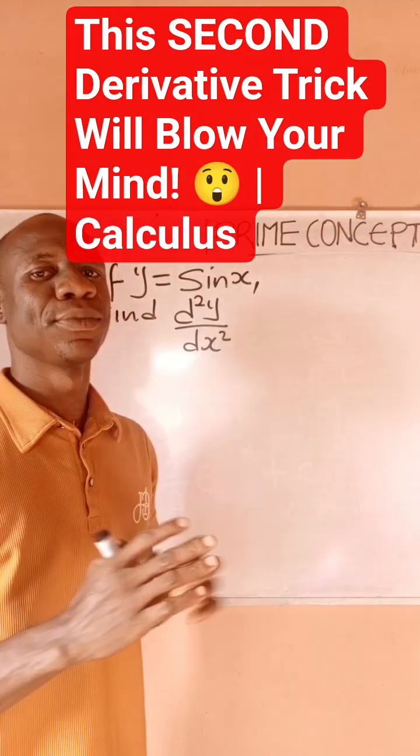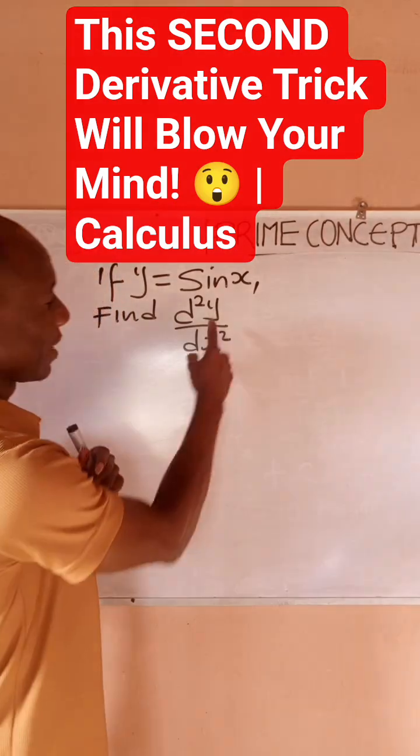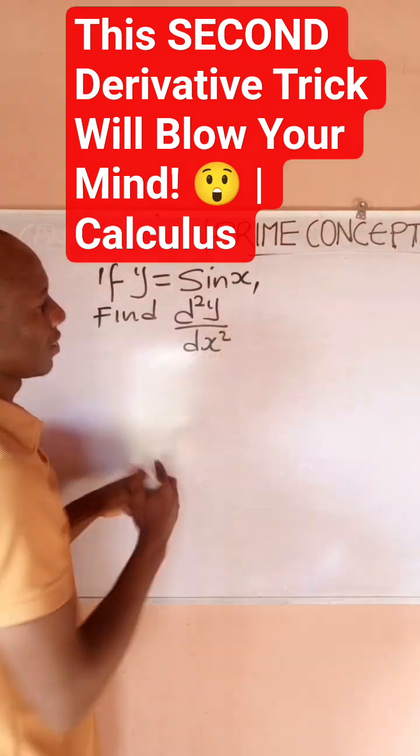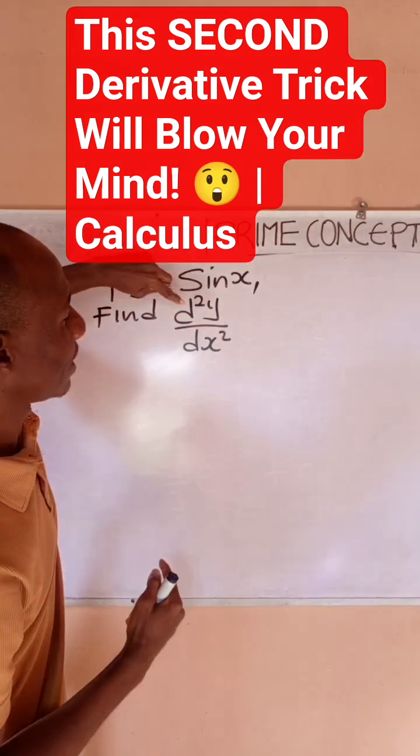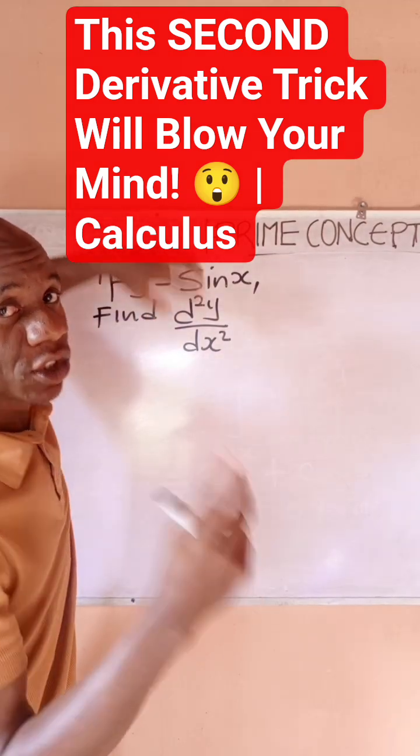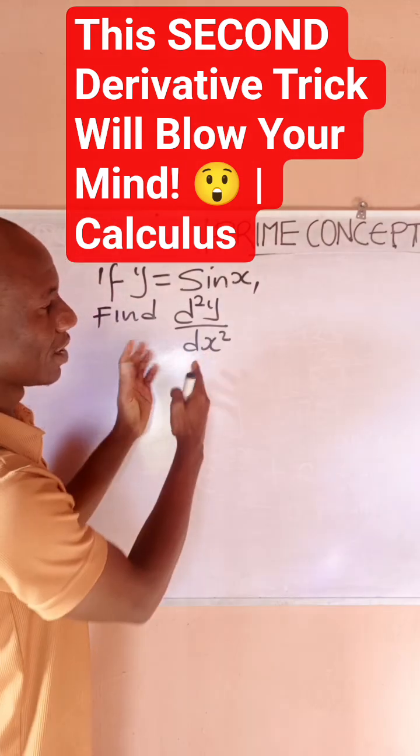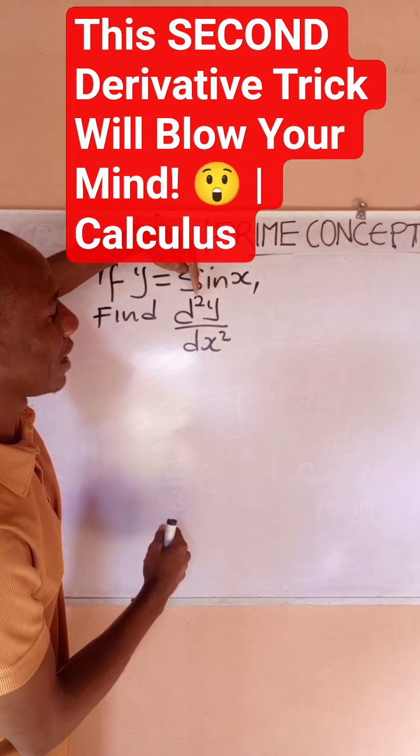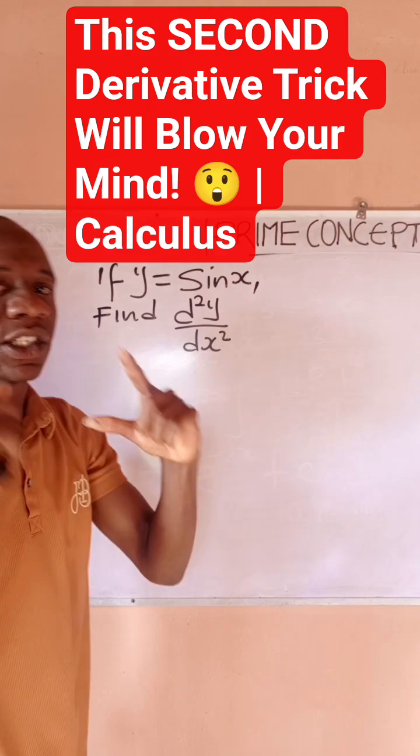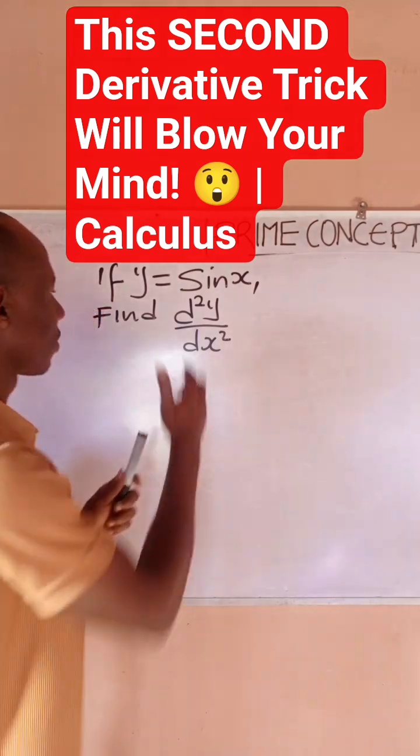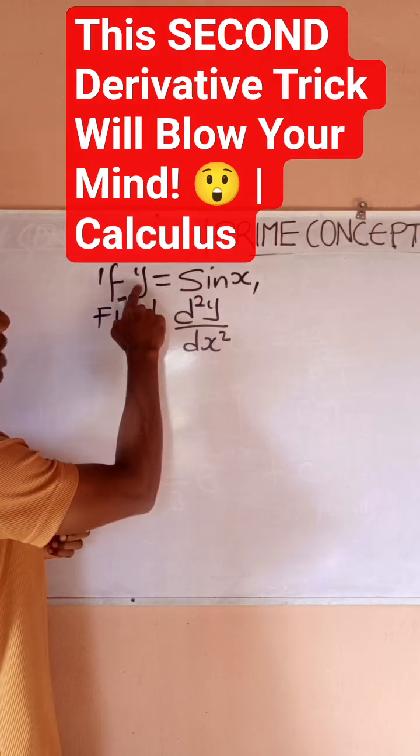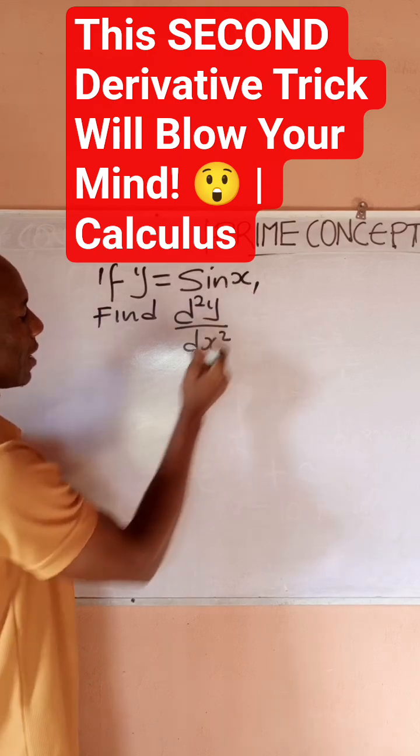Hello guys, we have a simple problem on the board under higher order derivatives. This thing simply means you are differentiating this original function twice. When you have power 3, it means you should differentiate three times.